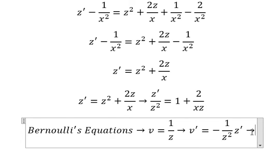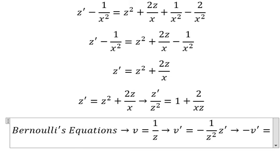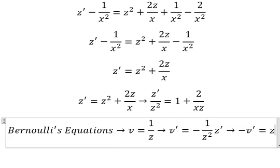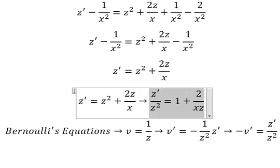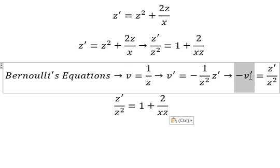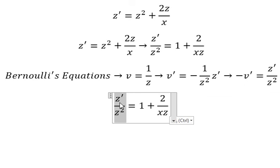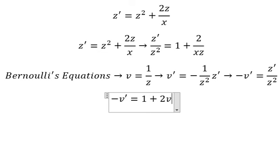Because we don't have the negative sign on the right side, I will move the negative to the left. So we have negative of the first derivative of v equals the first derivative of z over z squared. We then change this term by negative first derivative of v, and this term becomes v, giving us two v over x.